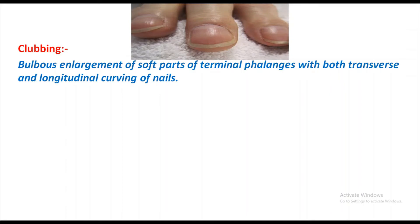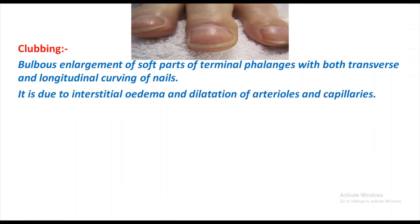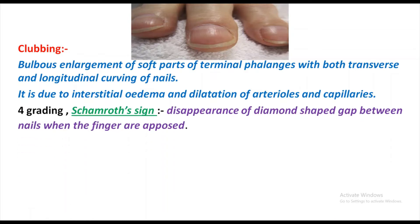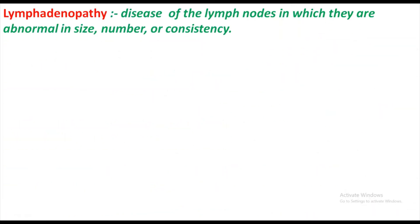Clubbing is the bulbous enlargement of the soft part of the terminal phalanges with both transverse and longitudinal curving of the nails. It is due to interstitial edema and dilatation of arterioles and capillaries. There are four grades. The fourth grade is called Schamroth's sign — it is the disappearance of the diamond-shaped gap between the nails when the fingers are opposed. In normal condition you will see a diamond-shaped structure, but loss of this is called Schamroth's sign.